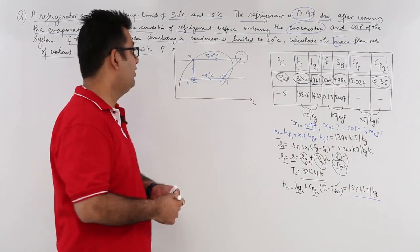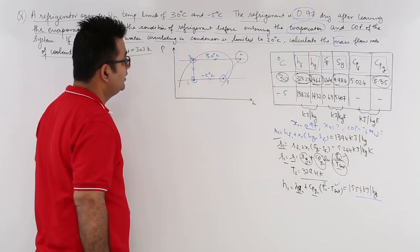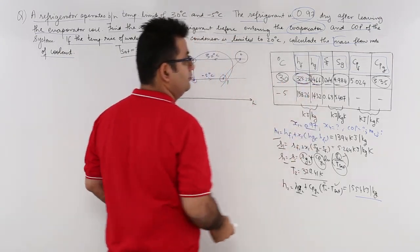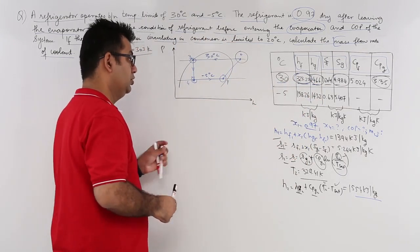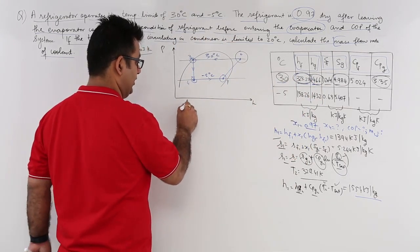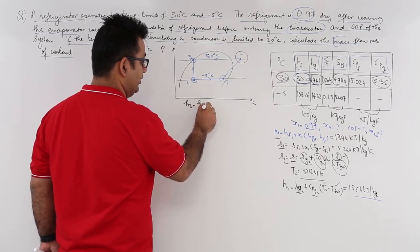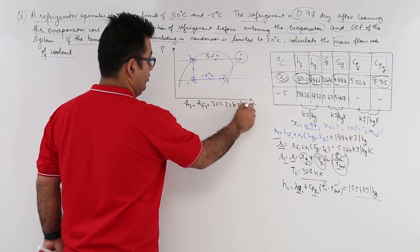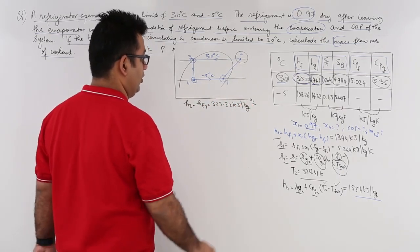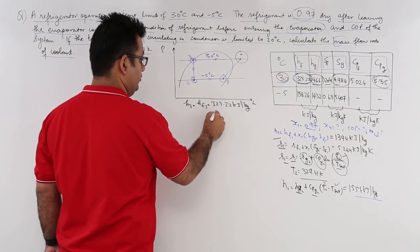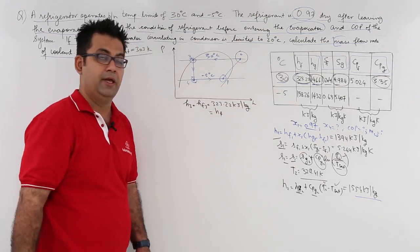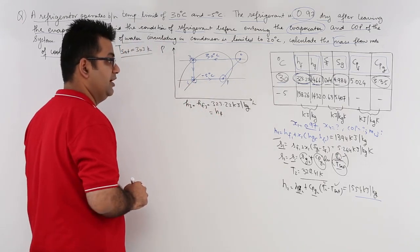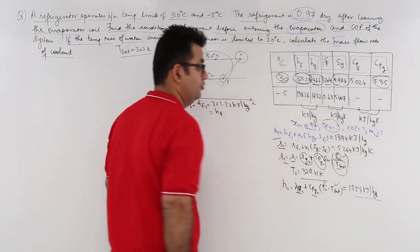After finding H2, let us find H3. At the condenser exit the refrigerant is saturated liquid at 30°C, so H3 = HF3 = 323.22 kJ/kg. Since the expansion through the throttle valve is isenthalpic, H4 = H3 = 323.22 kJ/kg.